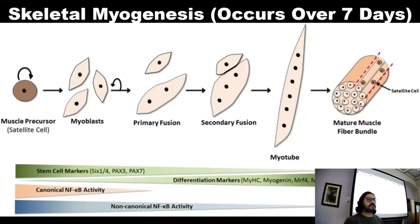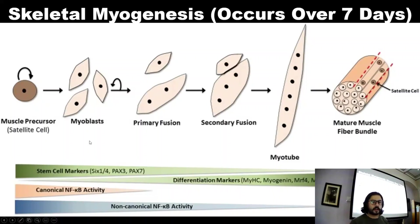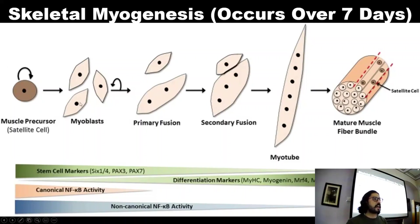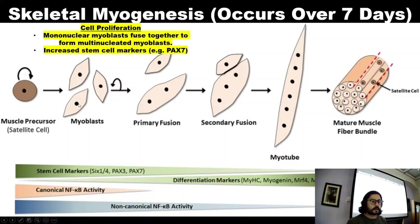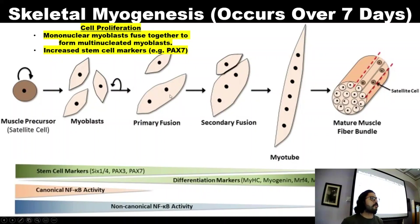This process is called skeletal myogenesis and it occurs over a seven-day period. So if you do a heavy resistance training session today, you might get pain the next day — and while you're feeling that pain and recovering, this process is occurring in your body. The satellite cell is located on the outskirts of the muscle. It gets a group of myoblasts — mononuclear cells with just one nucleus — and brings them together. These individual cells then become one multi-nucleated cell: a multi-nucleated myoblast.